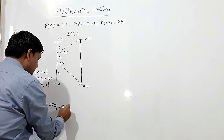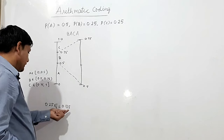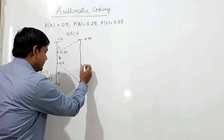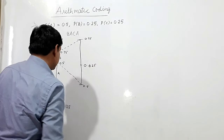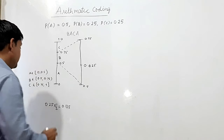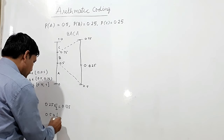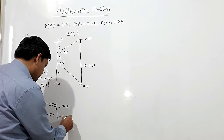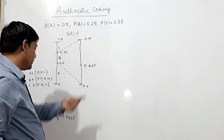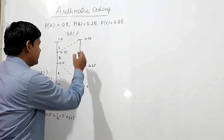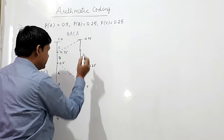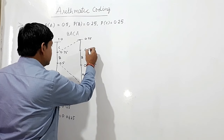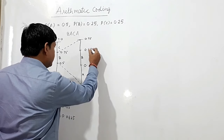Multiplying 0.25 by one half gives 0.125, so A's sub-interval goes from 0.5 to 0.5 plus 0.125, which is 0.625. For B's sub-interval, 0.25 multiplied by one quarter (probability of B = 0.25) gives 0.0625. Adding 0.0625 to 0.625 gives B's upper limit of 0.875. So A's interval is [0.5, 0.625) and B's interval is [0.625, 0.875).